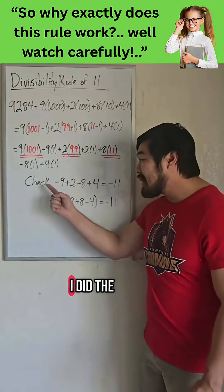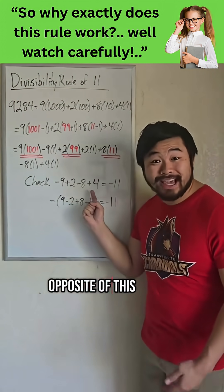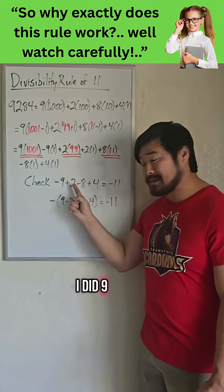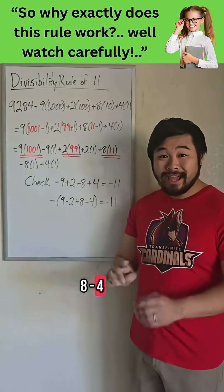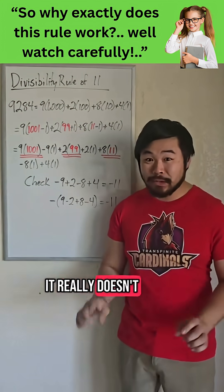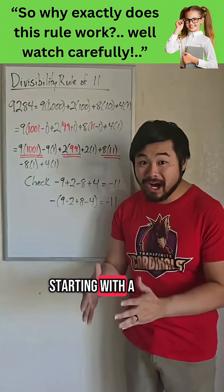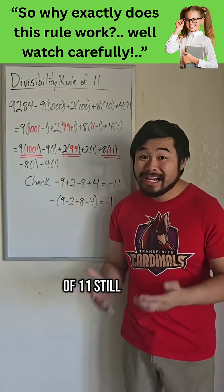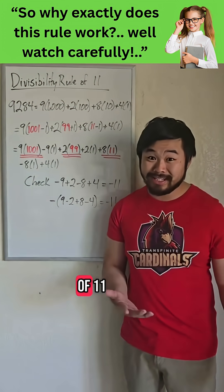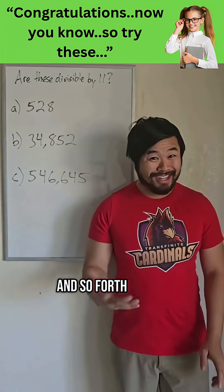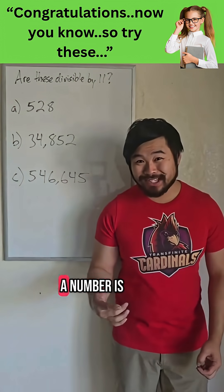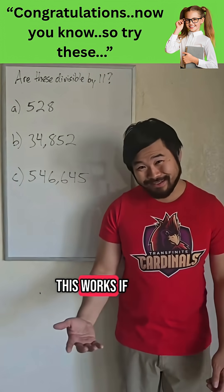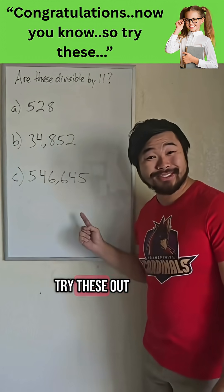Now, you may have noticed that I did the opposite of this at the very beginning of the video. I did positive 9 minus 2 plus 8 minus 4. And to be honest, it really doesn't matter whether you're starting with a positive or a negative, because negative multiples of 11 still count as multiples of 11. So there you have it — a quick way to see if a number is divisible by 11 and why this works. If you want practice, try these out.